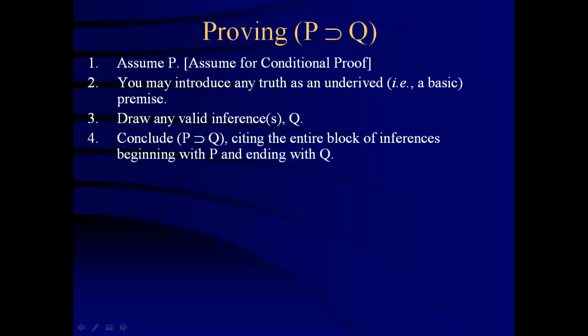You conclude if P then Q, and the citation at the end of that conditional when you flag that line, you cite the entire block of inferences, the numbers that were used. Sometimes the number of lines, the number of basic premises you introduced, and the number of inferences you made are lengthy. Sometimes it's not so much. But whatever the case, you include all of the lines beginning with that assumption and ending with that consequent, and all the ones in between. Here's a little diagram to show this.